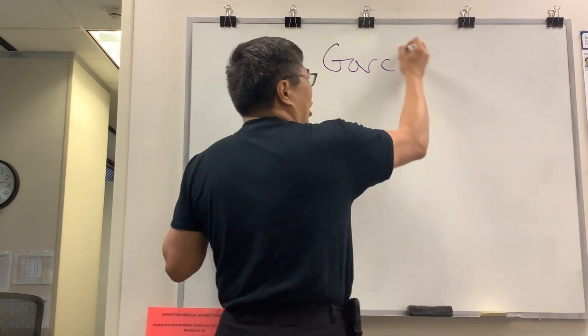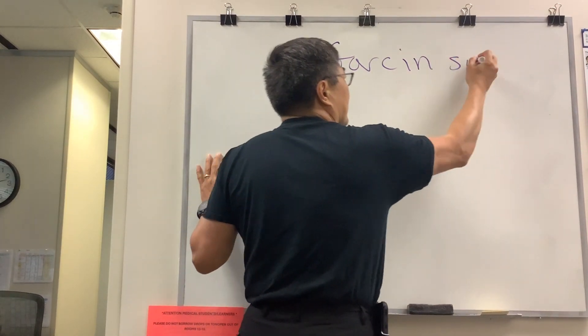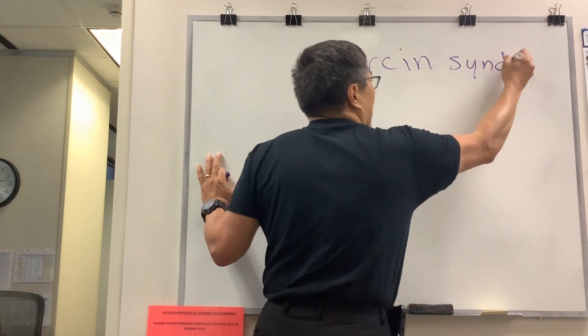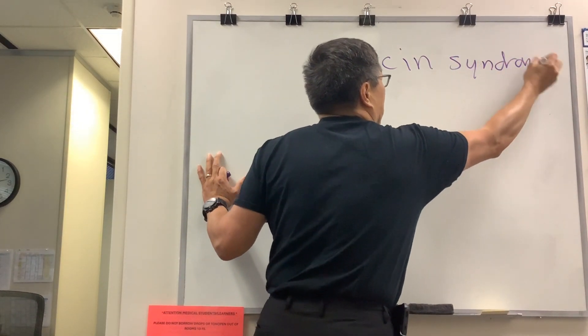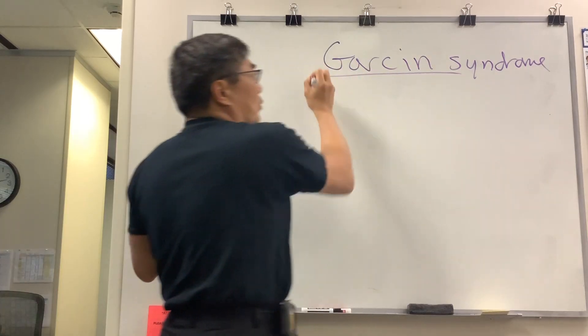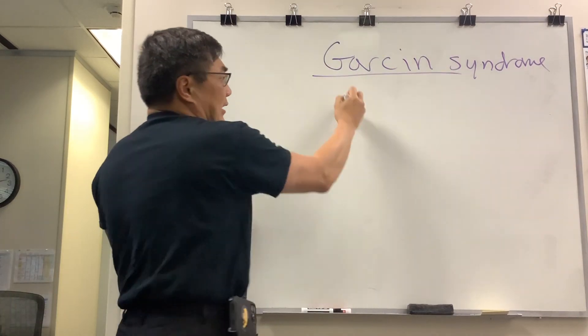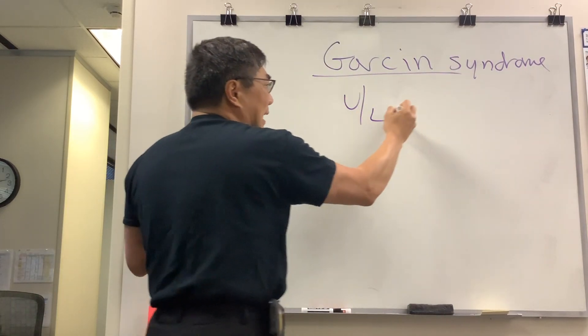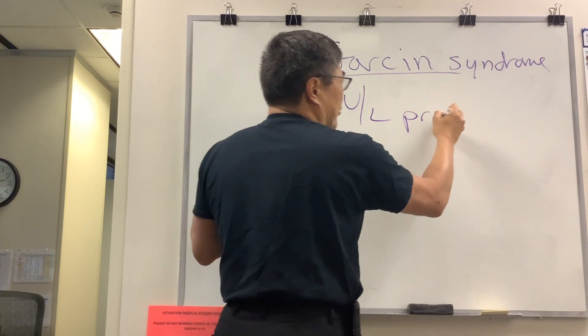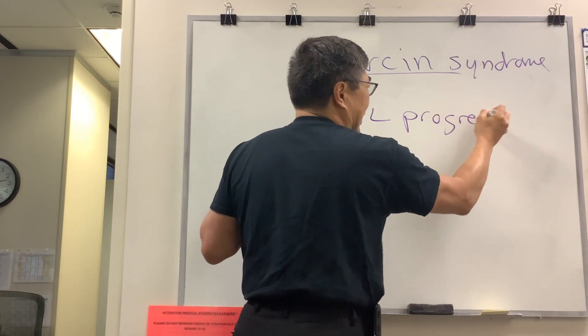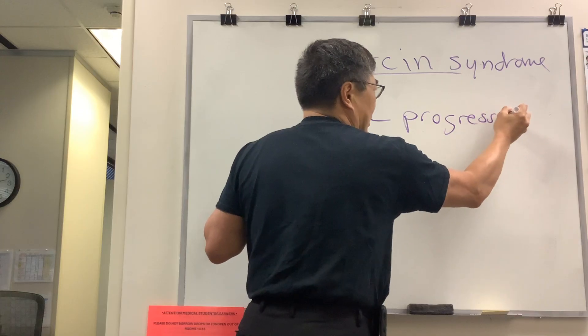I want to talk to you a little bit about Garson syndrome. Garson is just an eponym, and what it means is that you have a unilateral and progressive cranial neuropathy.